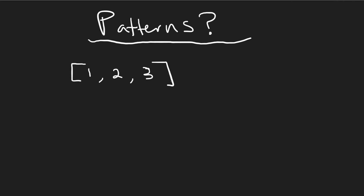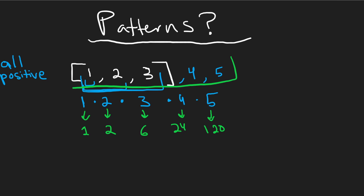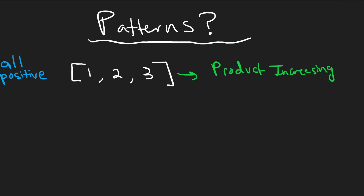Let's look at one example — do you notice anything? If all elements are positive, the running product just keeps increasing: 1, then ×2 = 2, then ×3 = 6, then ×4 = 24, then ×5 = 120. With all positive numbers our product always increases. So the all-positive case is easy: multiply all of them and you get the max product.